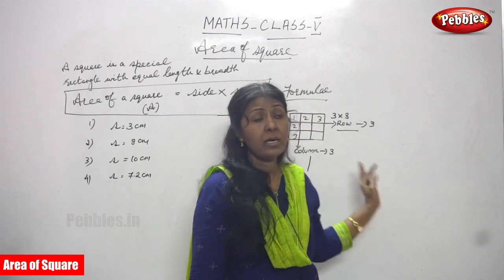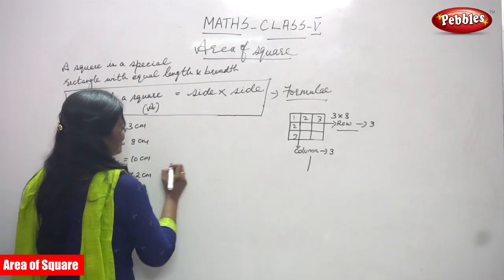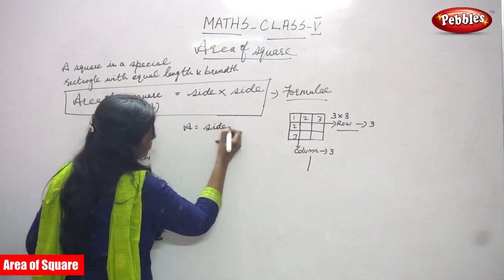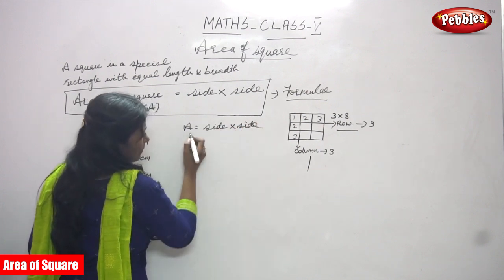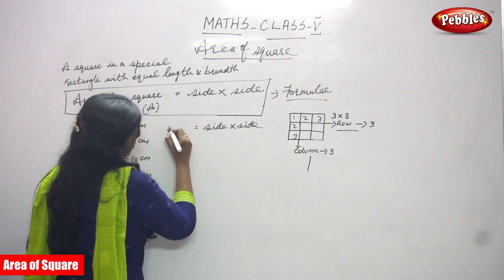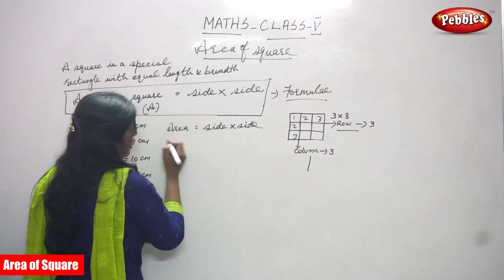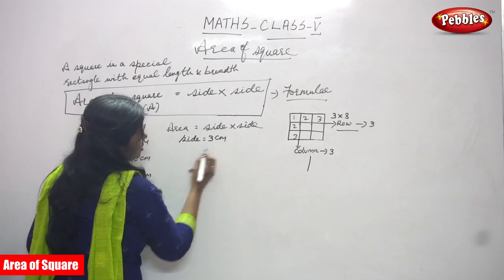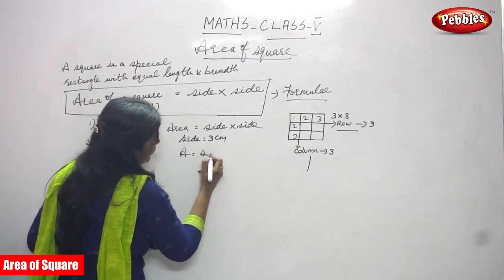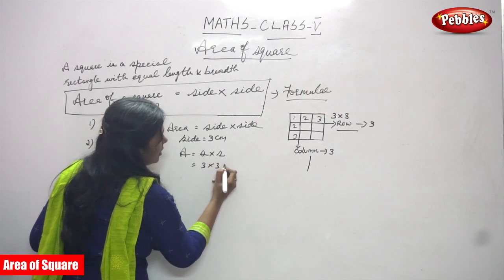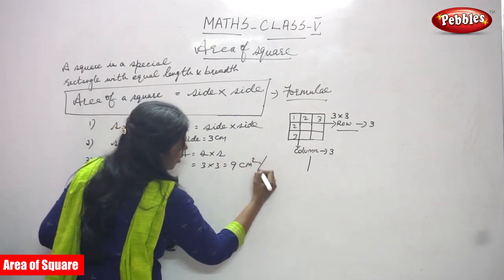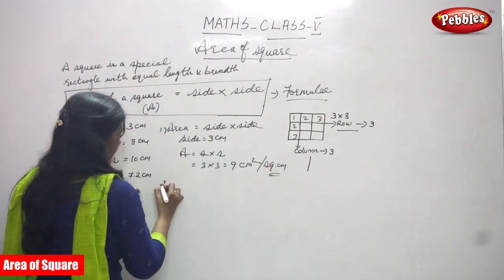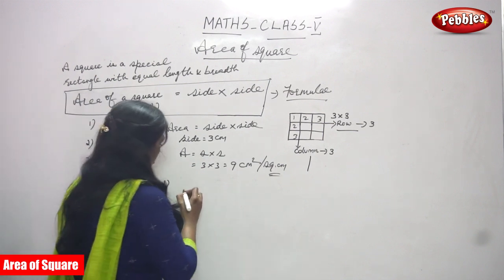Now we are going to solve the problem. Side is equal to three centimeters. Area is equal to side into side — 'A' represents area. So side s is equal to three centimeters. Area is equal to s into s, that means three into three, you get nine centimeter square.